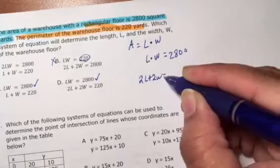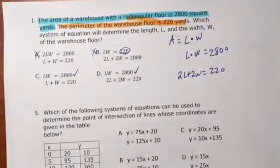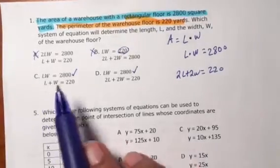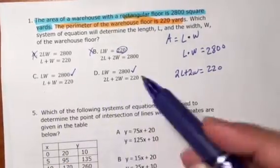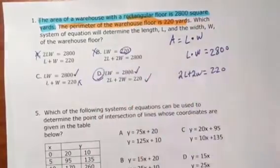That equals the 220. If you look, this has L + W and this has 2L + 2W. So this is not the correct one, but this one is. That's the right answer.